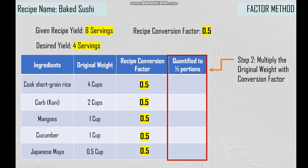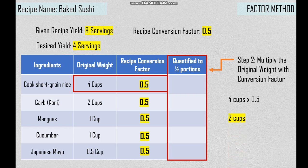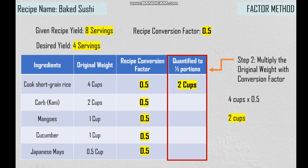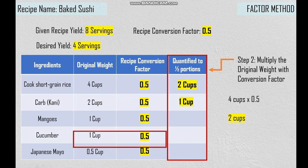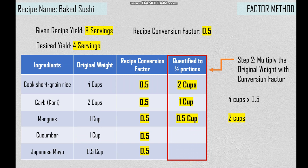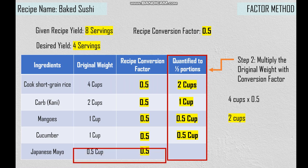For the cooked short grain rice with 4 cups and the recipe conversion factor 0.5, we just need to multiply it: 4 cups times 0.5 equals 2 cups. For crab or kani, 2 cups multiplied by 0.5 equals 1 cup. For mangoes, 1 cup multiplied by 0.5 equals 0.5 cup. The same for cucumber, 0.5 cup. And Japanese mayo with 0.5 cup multiplied by 0.5 equals 0.25 cup. We now have the quantified amounts into one-half portions.